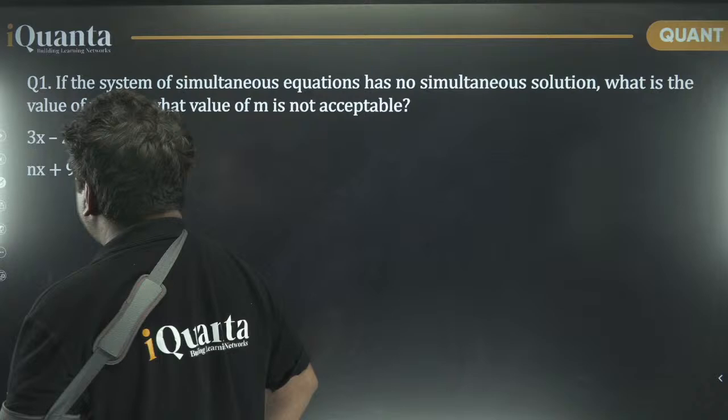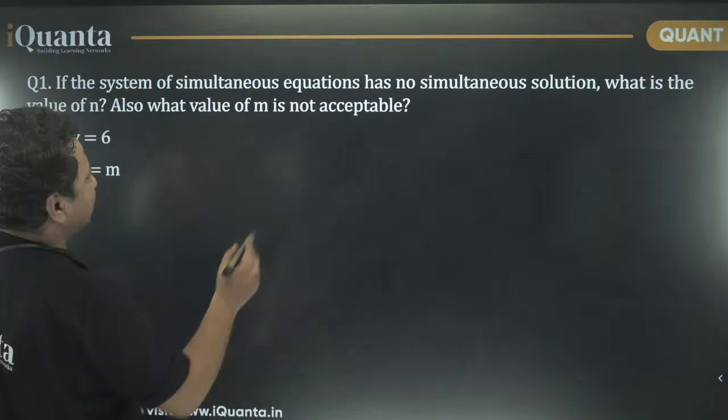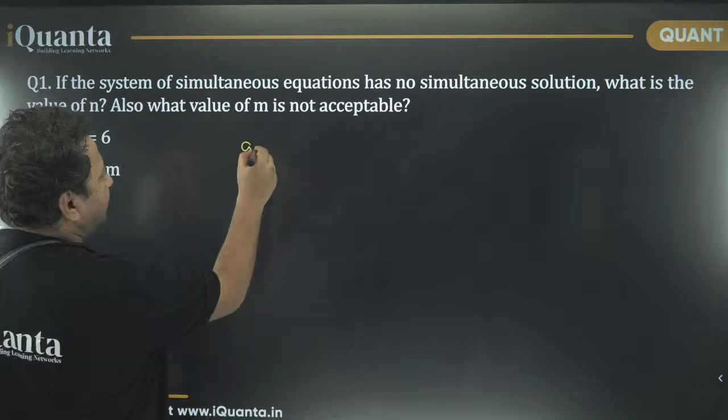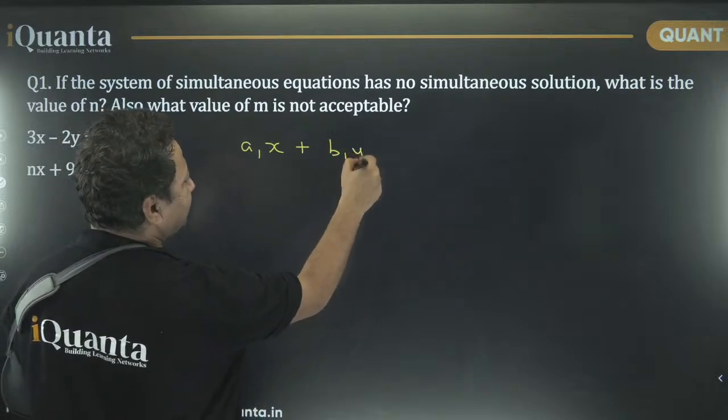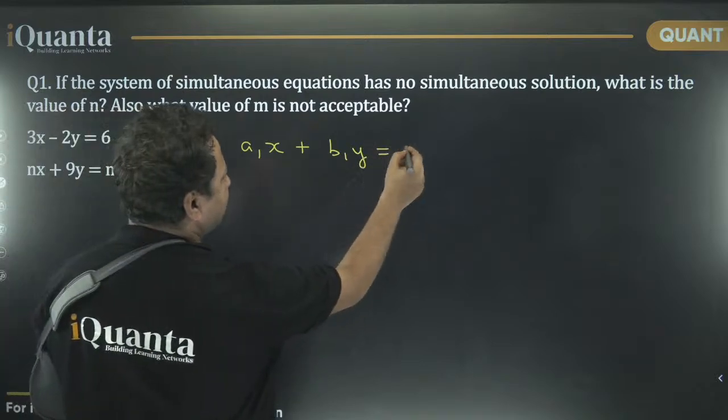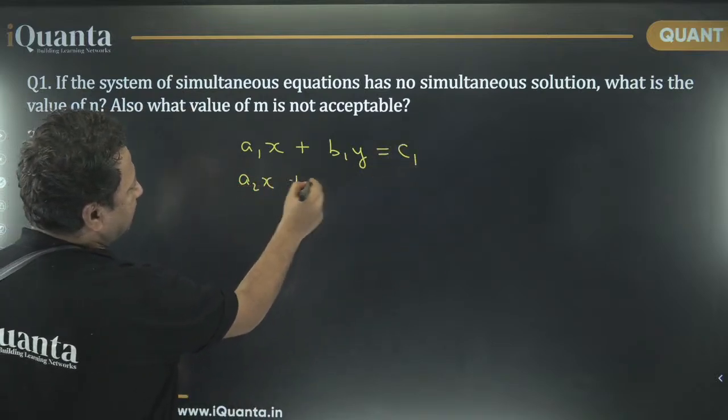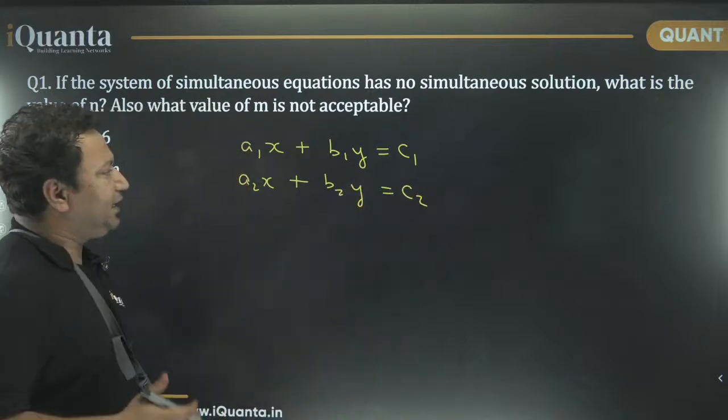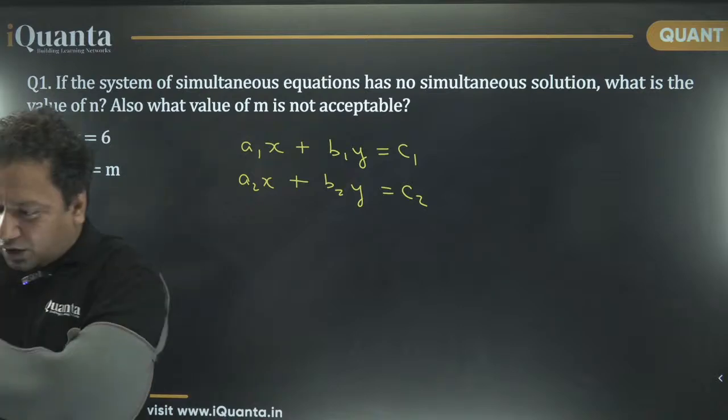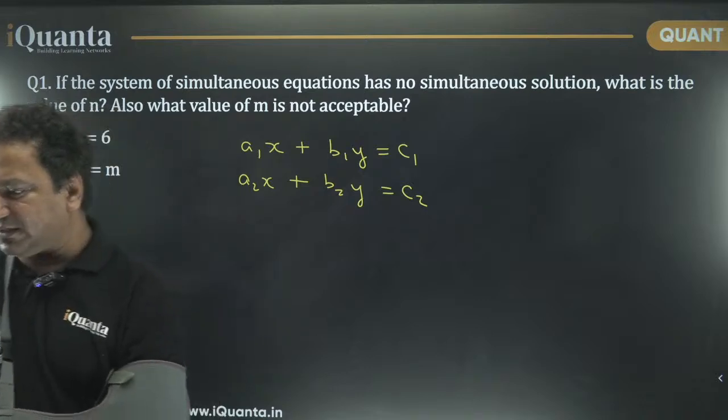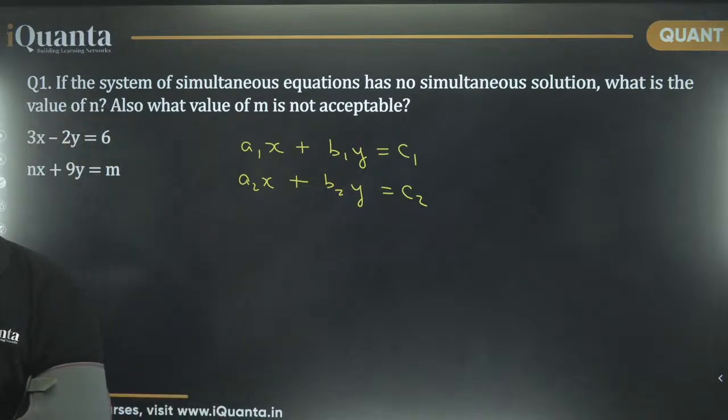We have two sets of equations. What happens exactly? Let us say, it is a1x plus b1y is equal to c1. Then we have a2x plus b2y is equal to c2. So here you can see a1 and a2 are the coefficients of x and b1 and b2 are coefficients of y and c1 and c2 are the constant terms. This is how generally a linear equation is written. There is x, there is y, there are coefficients and there is a constant term.